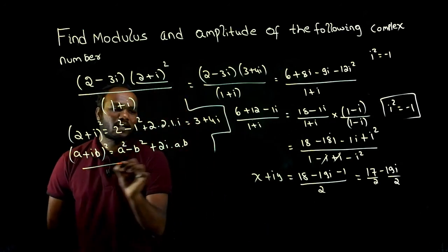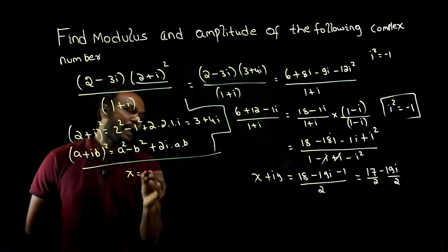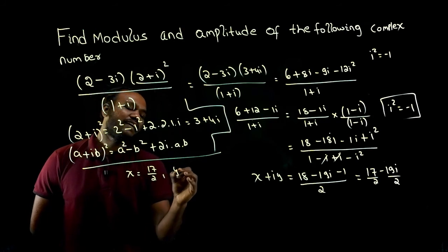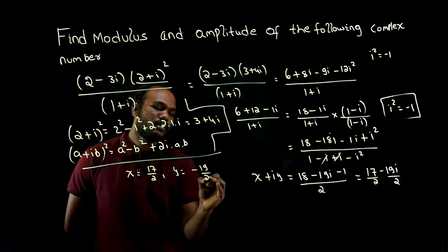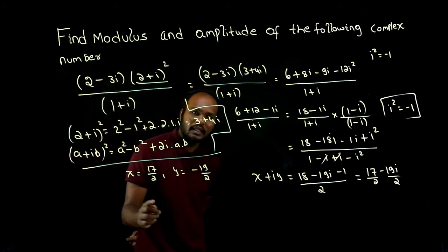Comparing with x plus iy, the x value is 17 over 2 and the y value is minus 19 over 2. This is the x value and this is the y value.